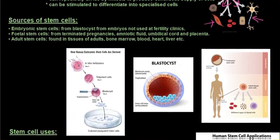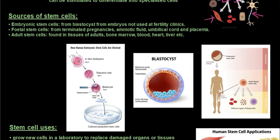Where do we find stem cells? Embryonic stem cells are found in the blastocyst from embryos not used at fertility clinics. Fetal stem cells come generally from terminated pregnancies or amniotic fluid; the umbilical cord and placenta also carry fetal stem cells. Adult stem cells are found in the tissues of adults such as bone marrow, blood, the heart, and the liver. If somebody has leukemia, they generally need a bone marrow transplant, using specialized bone marrow stem cells to replace blood cells.